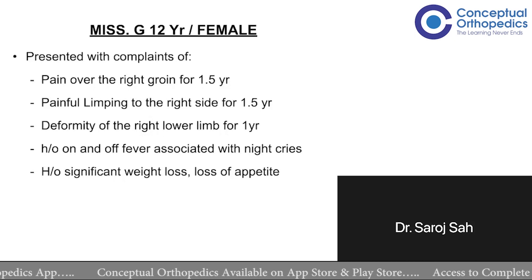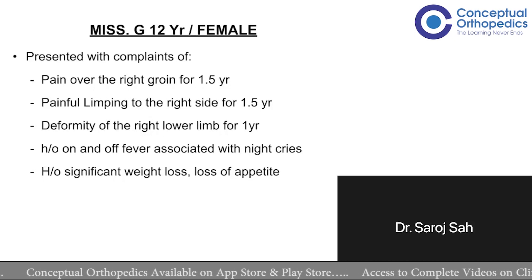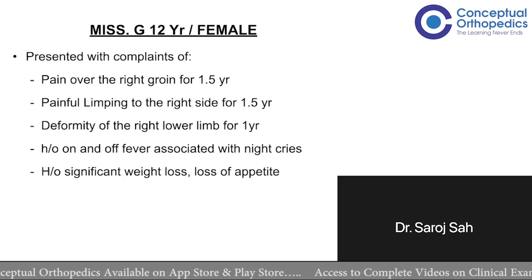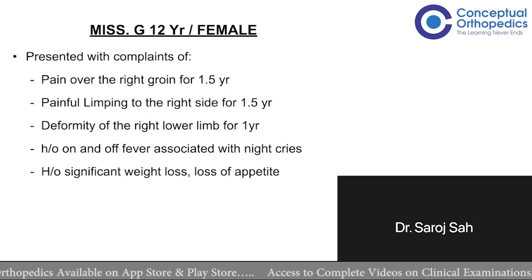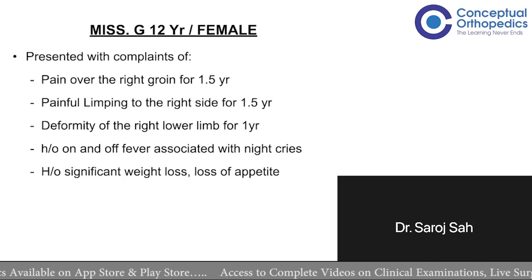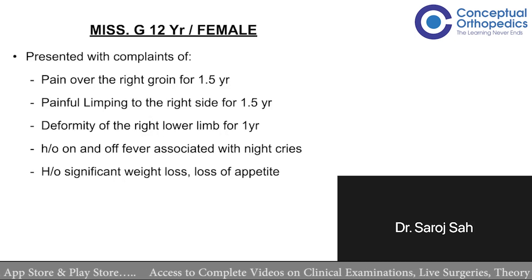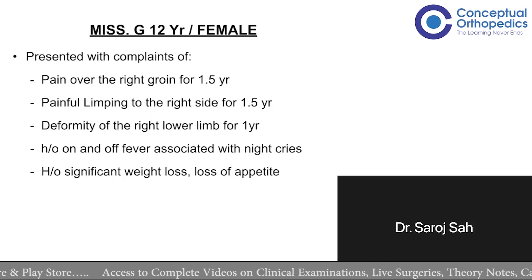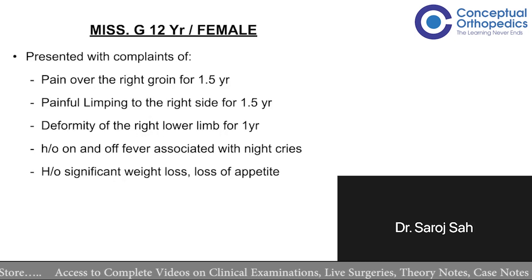After three months, the patient started developing deformities of the right hip, which were progressive, associated with shortening of the right lower limb compared to the left, limitation of movement, difficulty sitting cross-legged, and for the last two months the patient is on wheelchair mobilization.